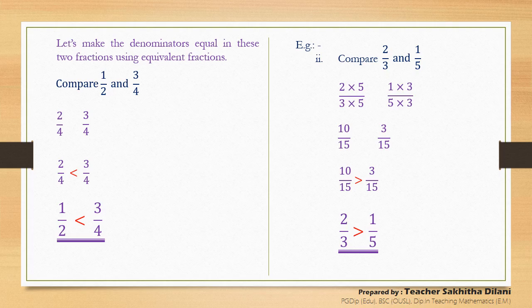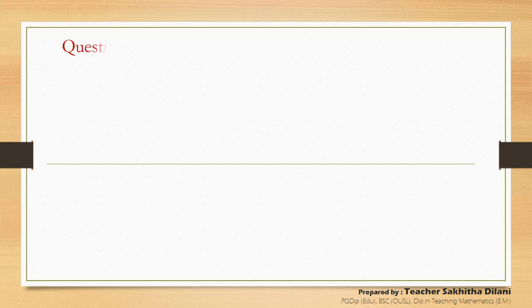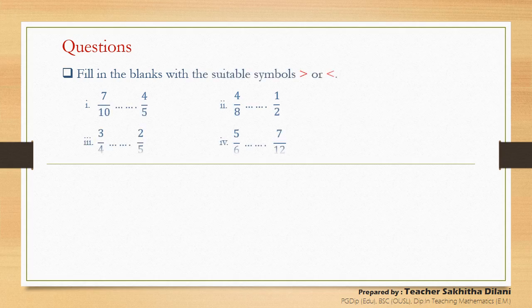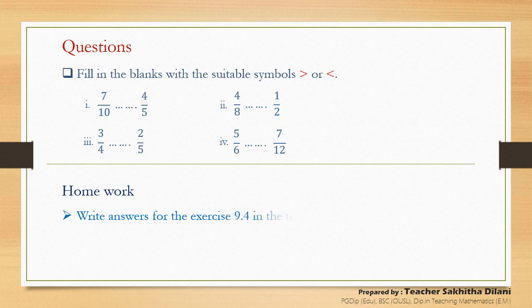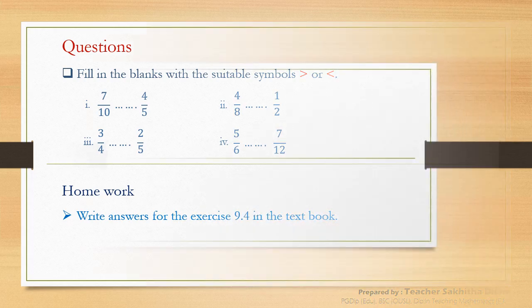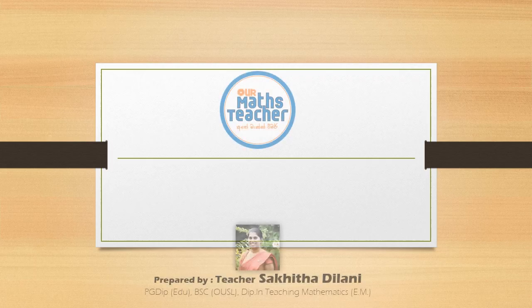Now I think you can understand well how to compare fractions with unequal denominators. You are given a question: fill in the blanks with the suitable symbols, greater than or less than. You are also given homework: write answers for exercise 9.4 in the textbook. I will be back in the next lesson in this unit. Don't forget to subscribe. Thank you.